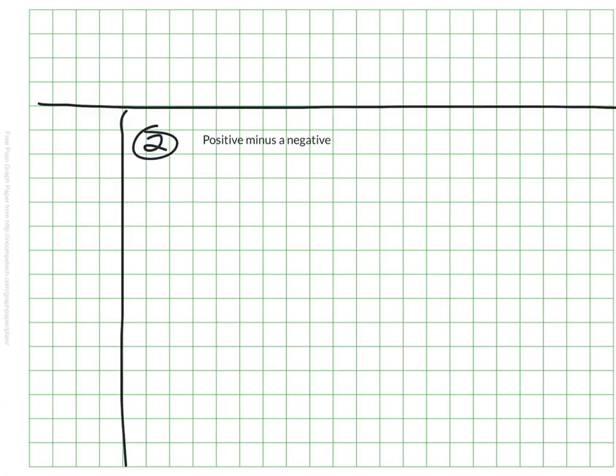A second scenario might be positive minus a negative. In this case, we need to add the total absolute values, and the answer will always be positive. For this quick example, we'll use the same digits, 7 minus negative 5. We would add the absolute values of 7 and 5, and that would be 12, and it's implied, but it would be positive 12.